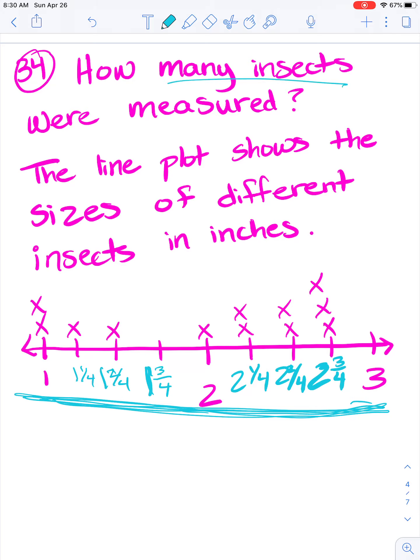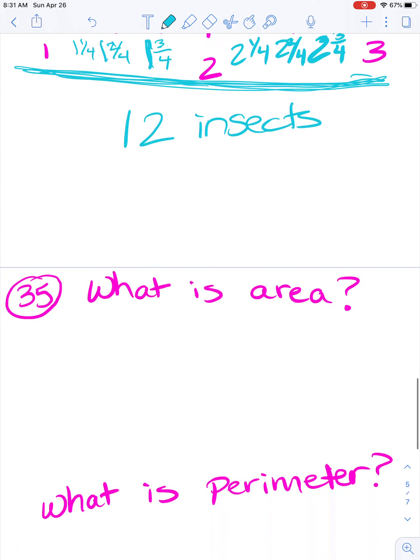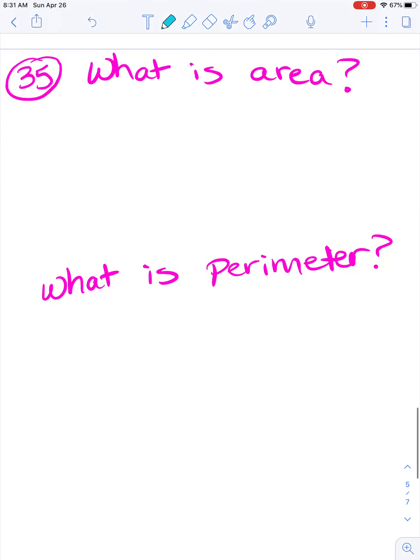How many insects? Well, each X equals an insect. So count your X's. One, two, three, four, five, six, seven, eight, nine, 10, 11, 12 insects were measured. I know line plots can be confusing. You don't really know what to use. You use the numbers, use the X's and a lot of times are kind of tricky.